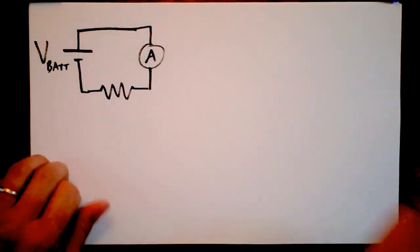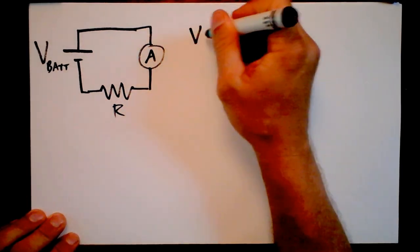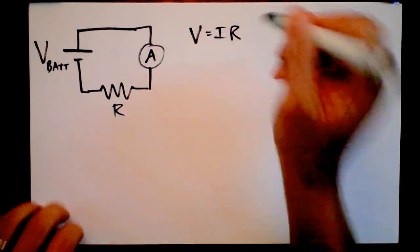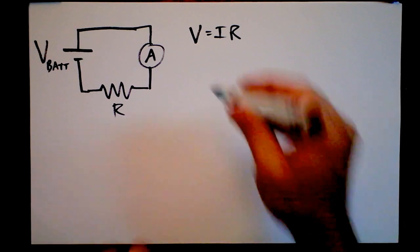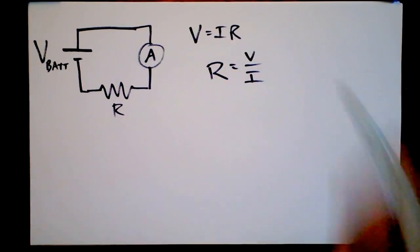And we could really quickly throw up some truth like V is IR. Sure, and that would give us the resistance. The resistance of this thing then has to be V over I.